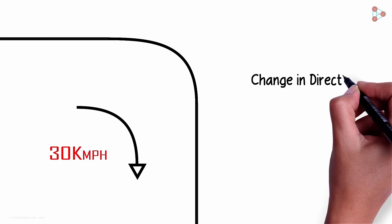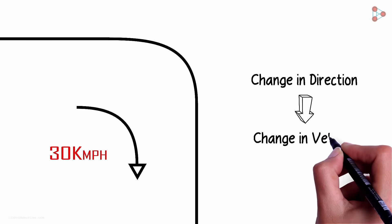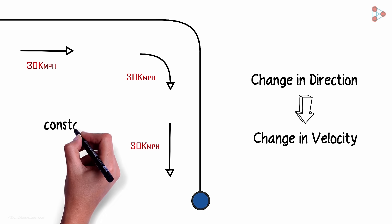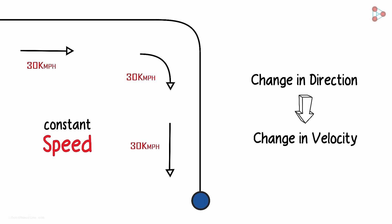As the direction is changing, the velocity will also change. The only thing constant in this example is speed, but the velocity changes as the direction changes. So this was the most important concept you had to know about acceleration. It will exist only when there is a change in velocity.